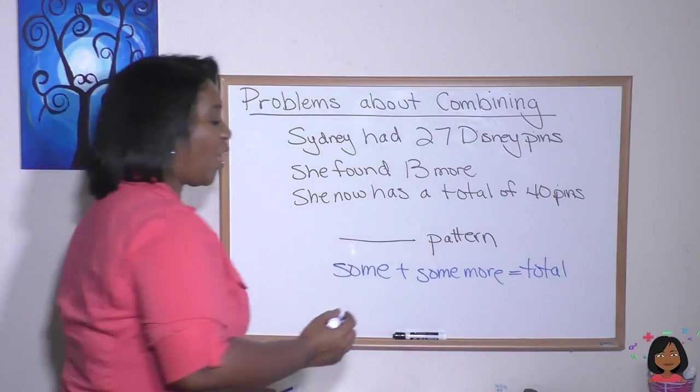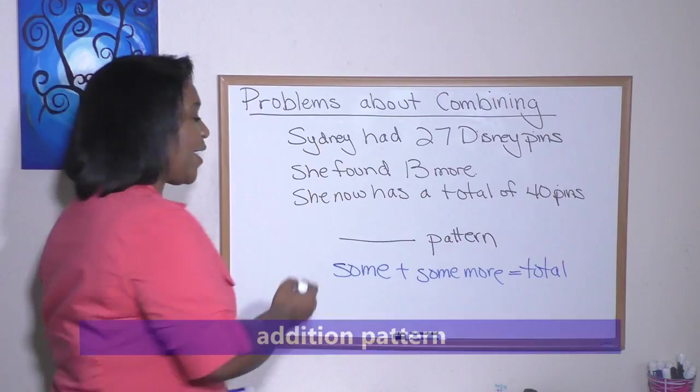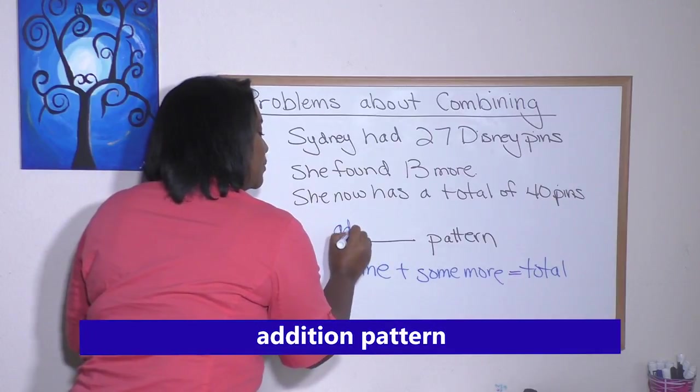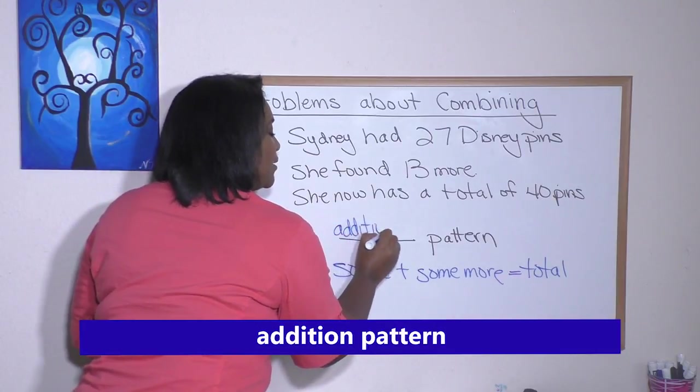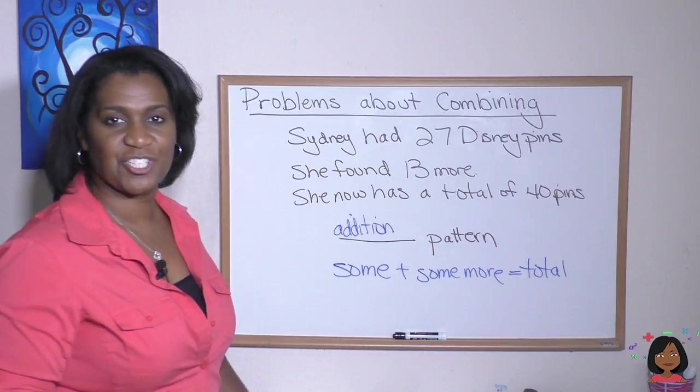So we call some plus some more equals a total. We call that an addition pattern because we are adding something to something that was already there. Addition pattern.